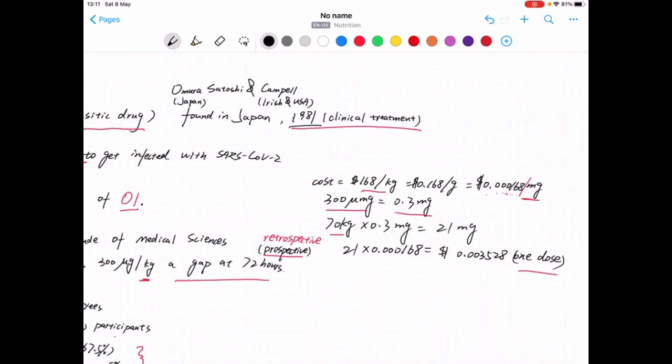It says every kilo costs 168 dollars, which means it's 0.000168 dollars per milligram.